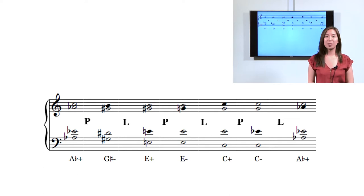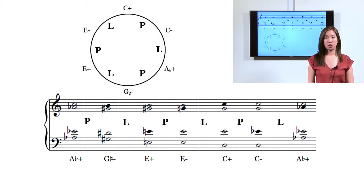This alternation between P and L forms a closed cycle of six major and minor triads, which means a triad will return to itself after a series of transformations.